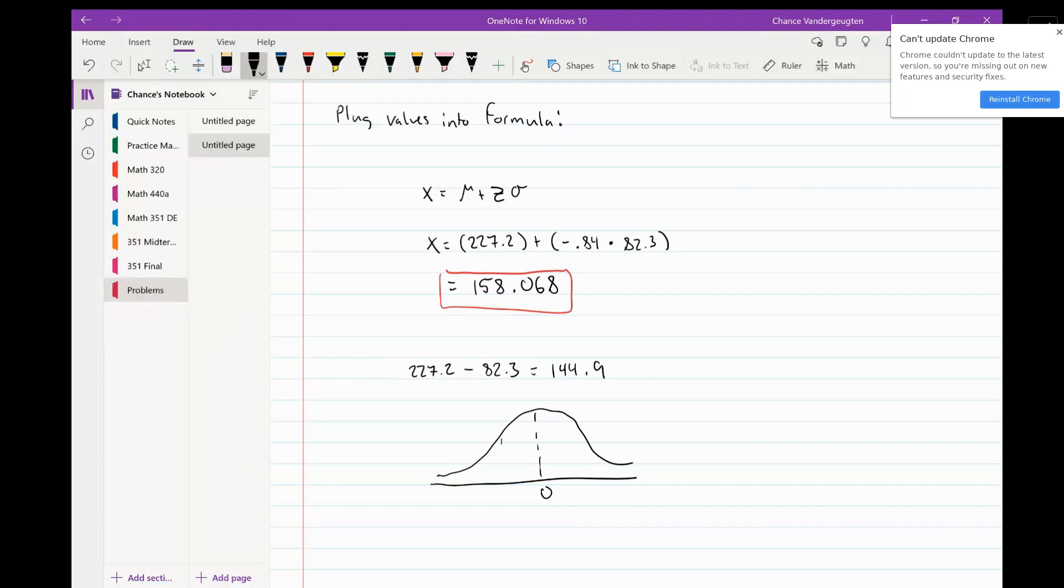this block is actually going to have about 34%. So if we do 50% minus 34%, we get 16%. So this is the 16th percentile, and our answer is greater than that, which makes sense because we're looking at a little bit above that.